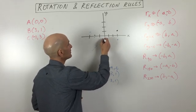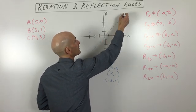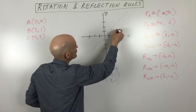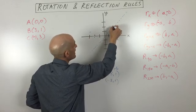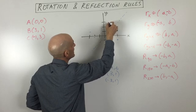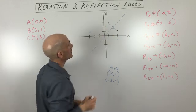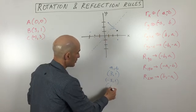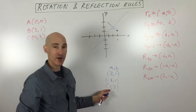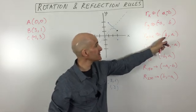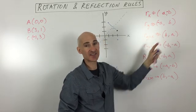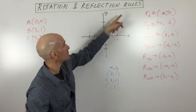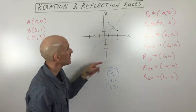Now if you reflect over the line y = x — that's the line on a 45-degree angle with a slope of one — you take the point and fold it over the line, measuring the perpendicular distance. Going the same distance on the other side, you end up at (1, 3). So going from (3, 1) to (1, 3), what we did is switch the x and y coordinates. That's what reflects the point over the line y = x.